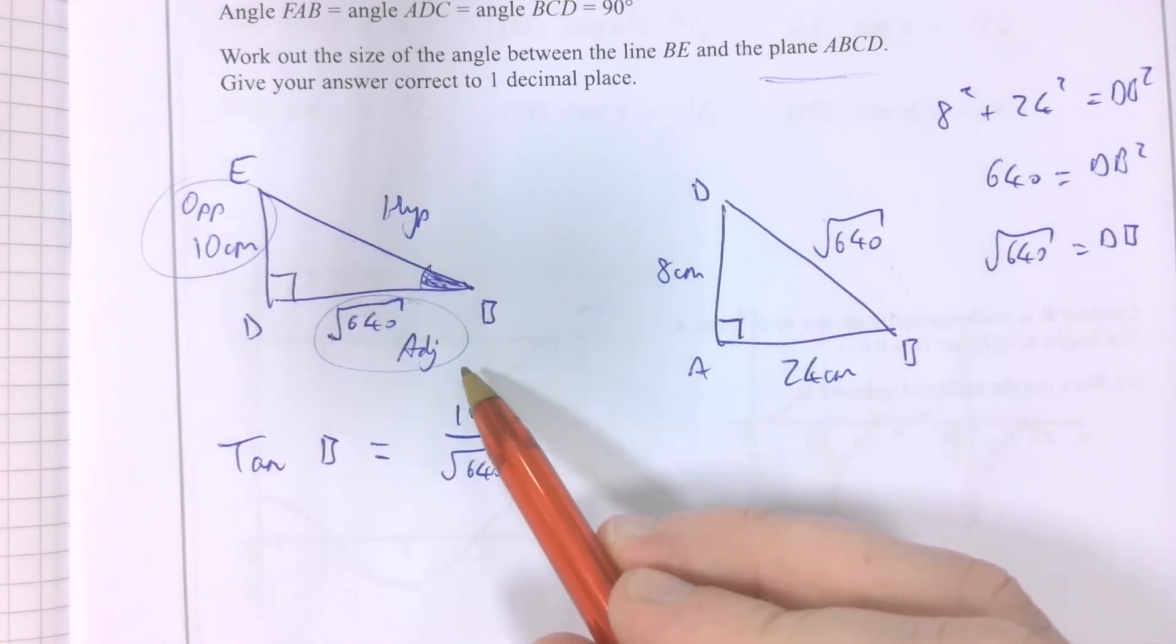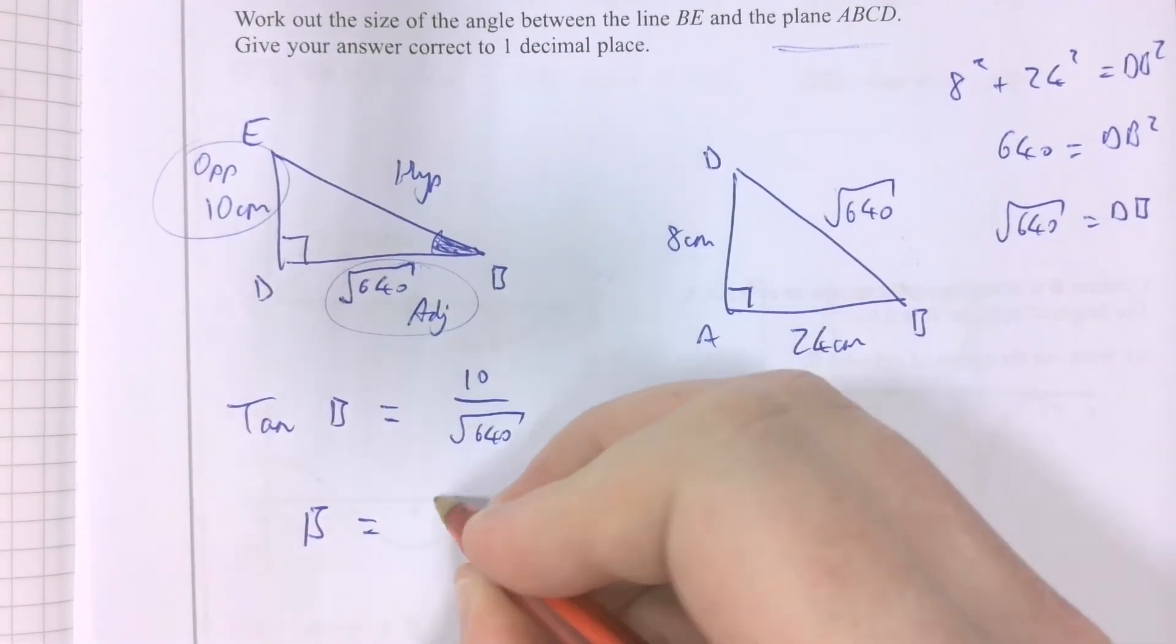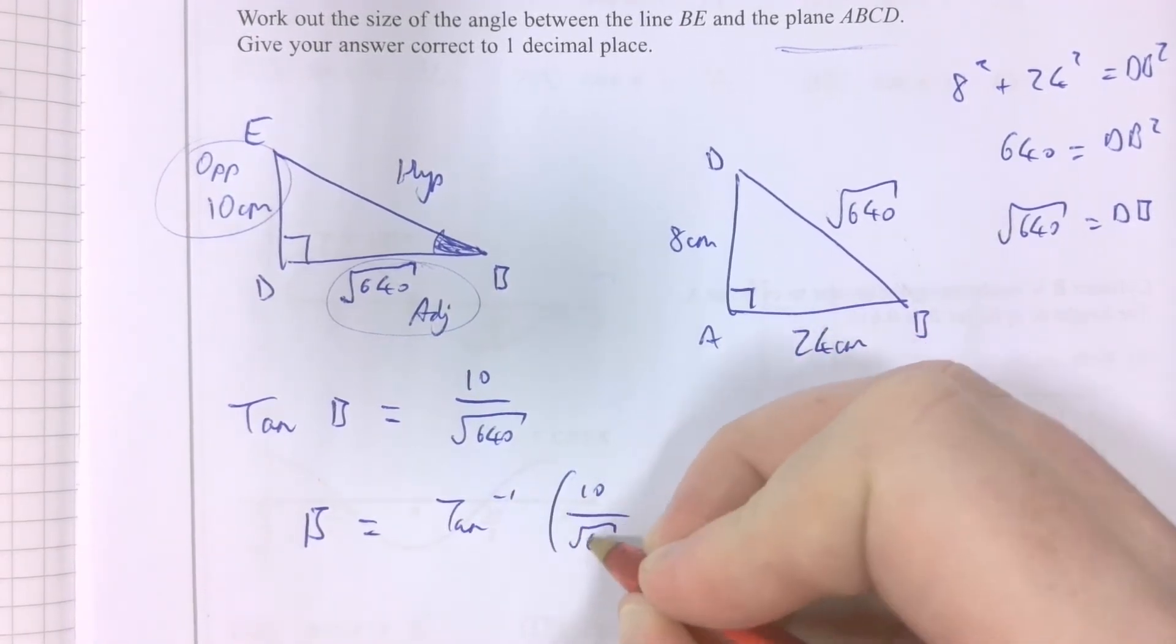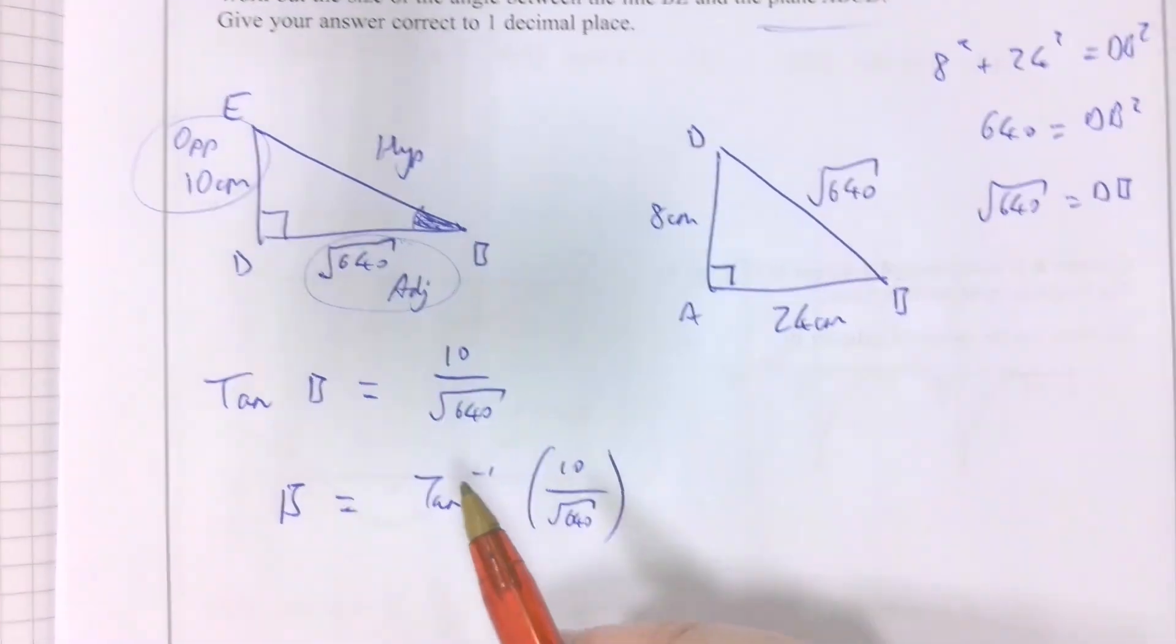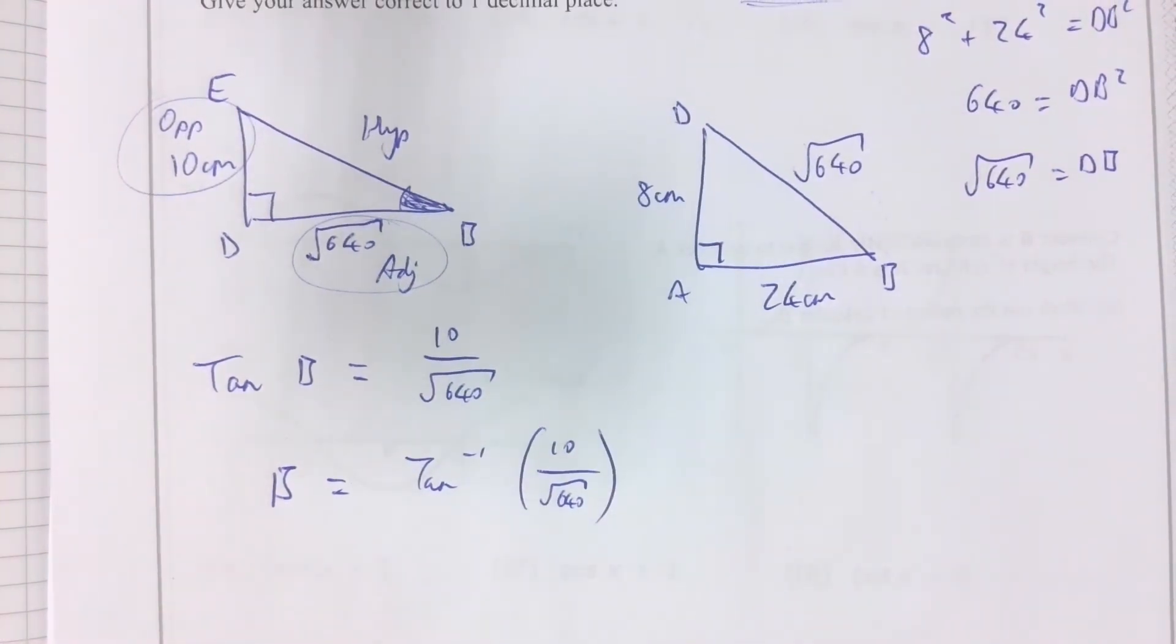Opposite is 10. Adjacent is root 640. So, to work out that angle, I have to work out the inverse tan of that fraction. So, if I get my calculator out and get cracking with that...